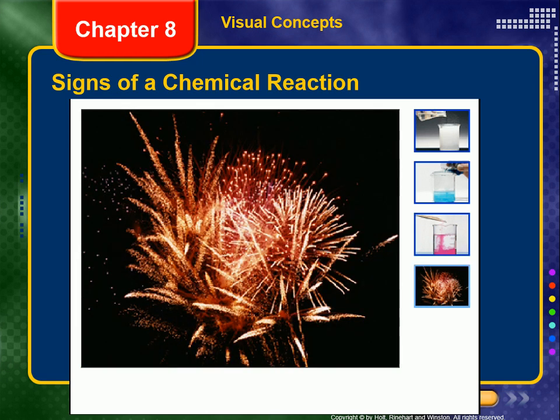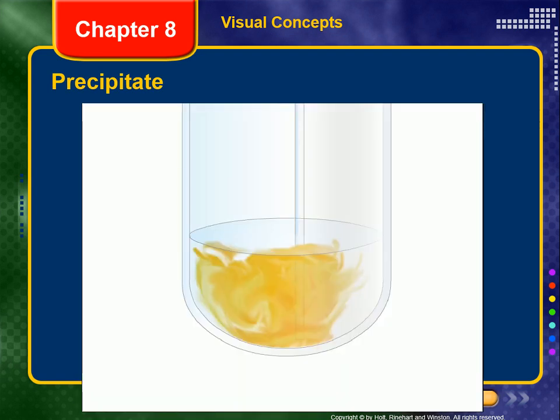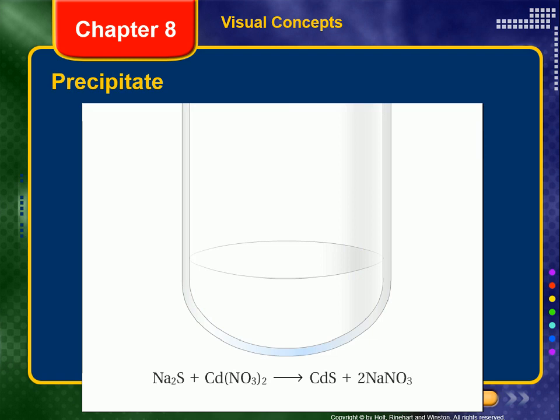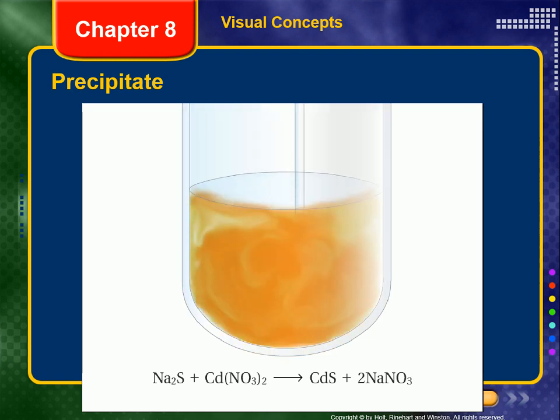The production of heat or light is a strong indication that a chemical reaction has occurred. Fireworks are a good example of a chemical reaction that produces heat and light. A precipitate is a solid produced as a result of a chemical reaction in solution. When sodium sulfide reacts with cadmium nitrate, it forms a yellowish-orange precipitate of cadmium sulfide.